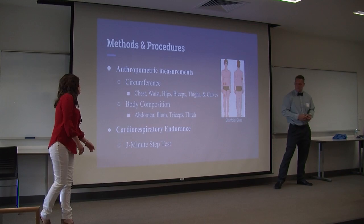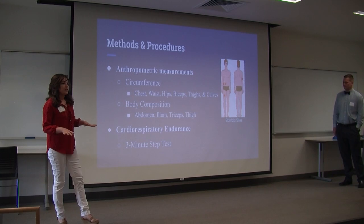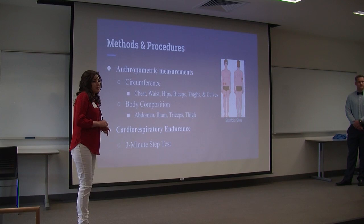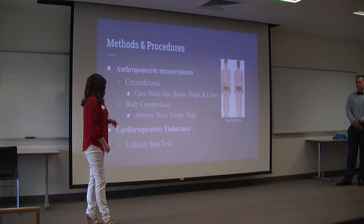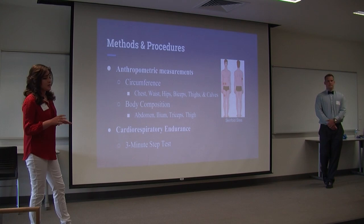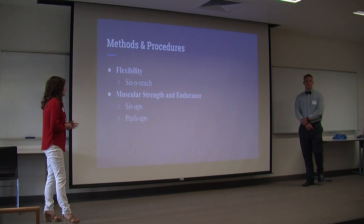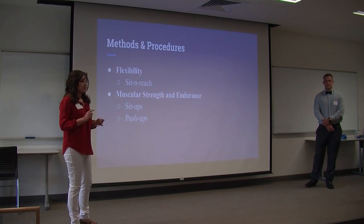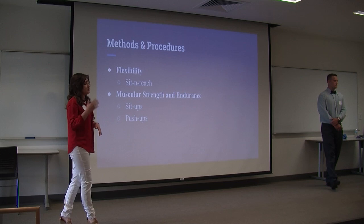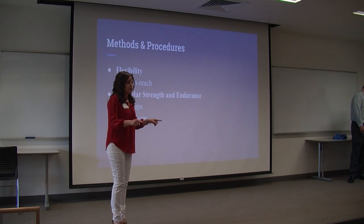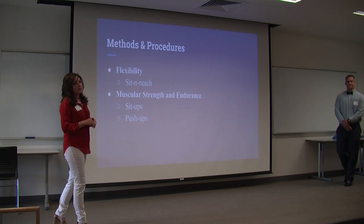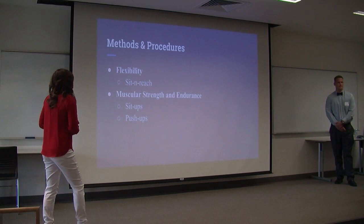For cardiorespiratory endurance we did the three-minute step test. We first let the athlete relax to get their resting heart rate, then gave them the three-minute step test — a 12-inch box, stepping up and down for three minutes to a 96-beats-per-minute metronome. Then we had them sit down right away and take their heart rate for 60 seconds to see how it decreases — their recovery rate. Then we did flexibility, followed by muscular strength and endurance: sit-ups with proper form — as many as you can in a minute — and push-ups, going all the way down and up at the same pace with no breaks.